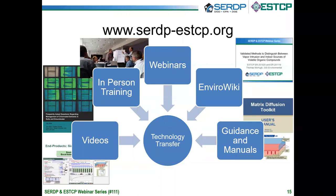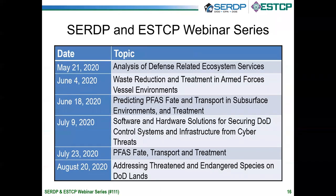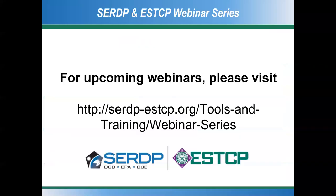Tech transfer is very important to us to get these technologies out to end users. We use a variety of methods including videos on YouTube, in-person trainings, guidances, manuals, and this webinar series. Listed here are a number of upcoming webinars over the next few months, including webinars on PFAS in June and July, as well as later in the year. You can register at the CERTIP and ESTCP website. With that, I'd like to turn it back to Rula.